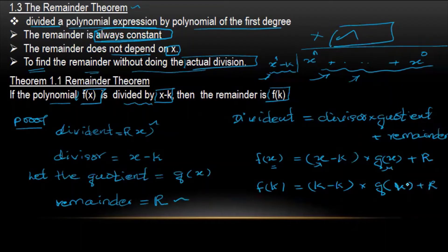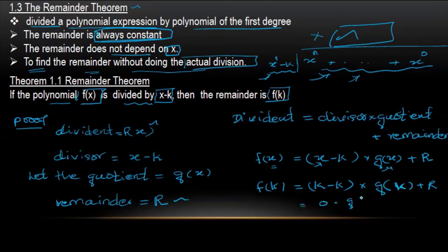For x equals k, we substitute x = k into f of x. So k minus k equals 0. Therefore 0 times q of k, plus r.